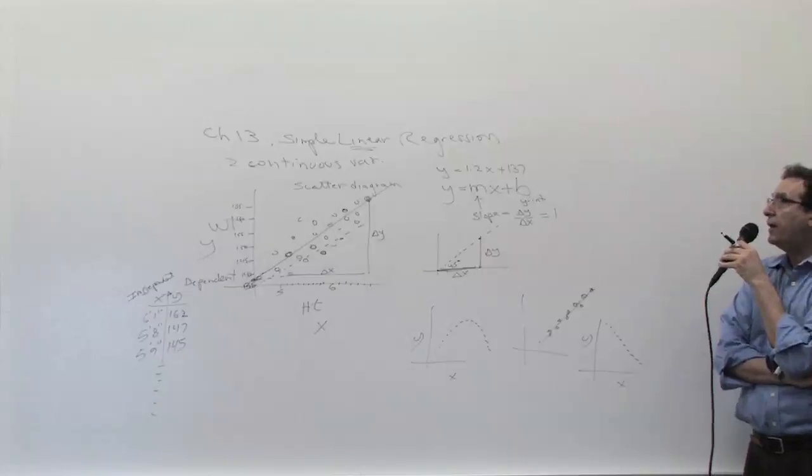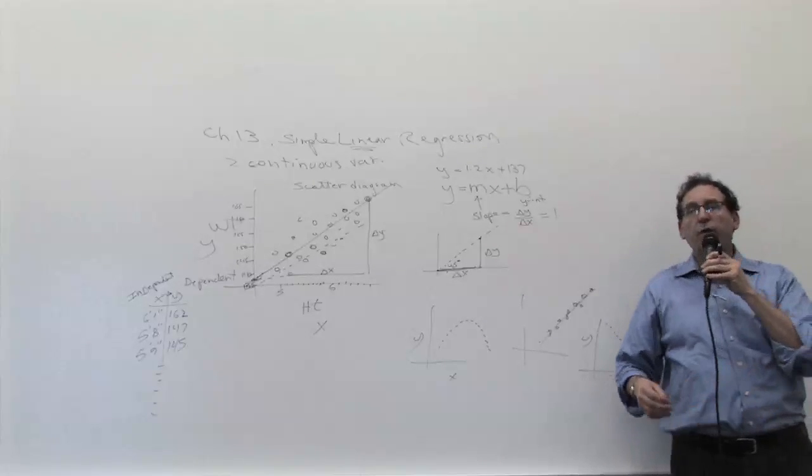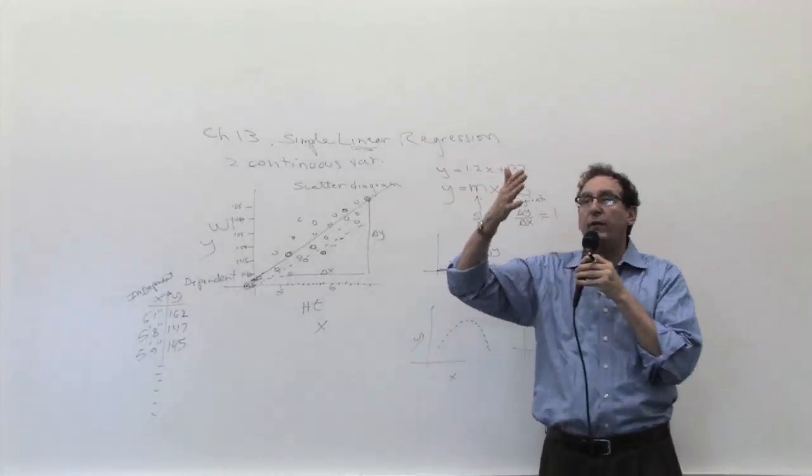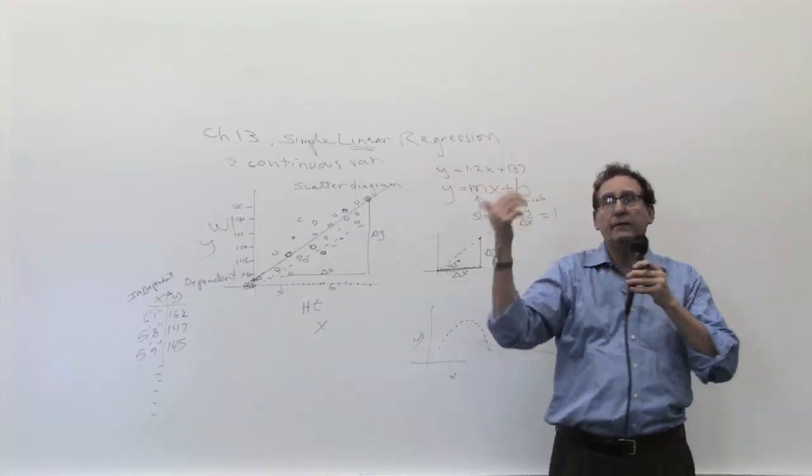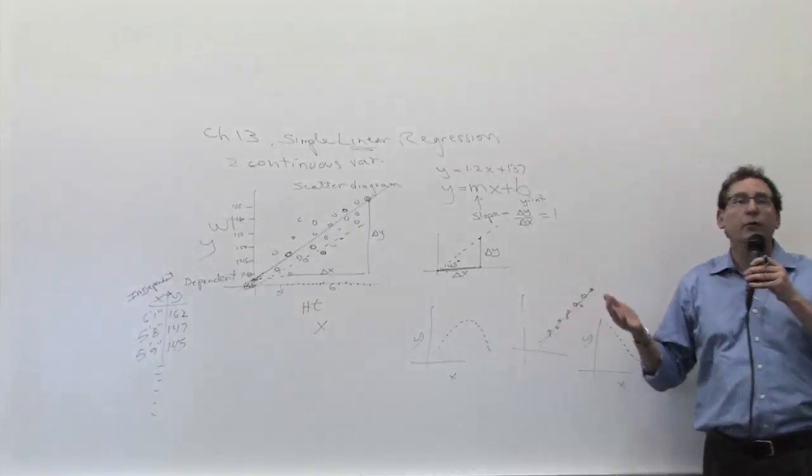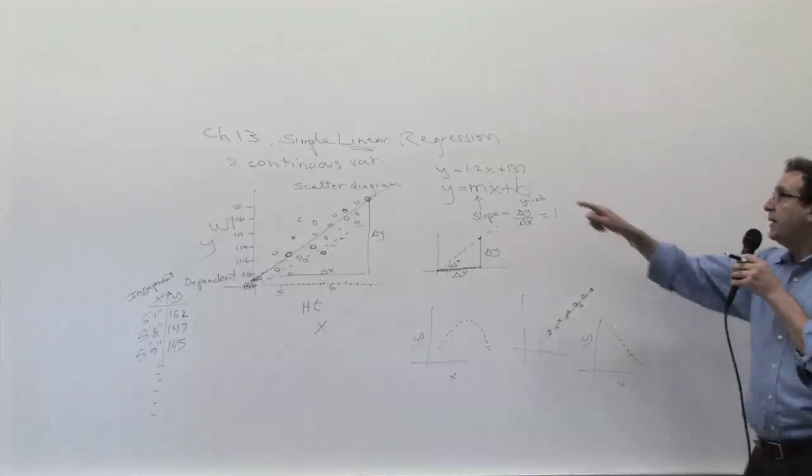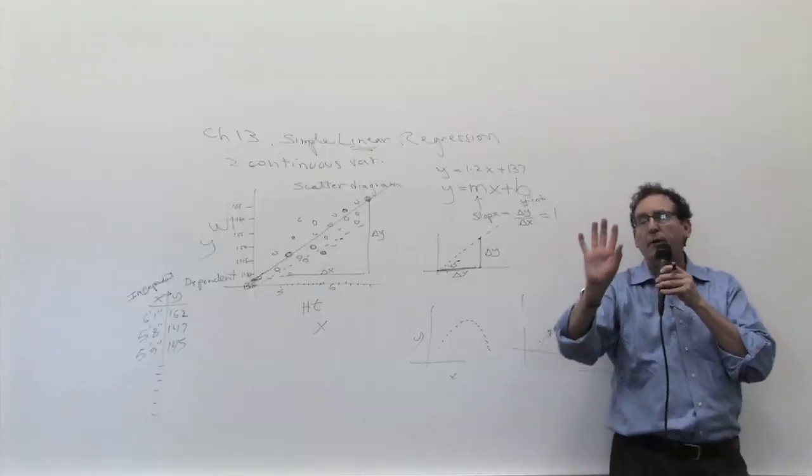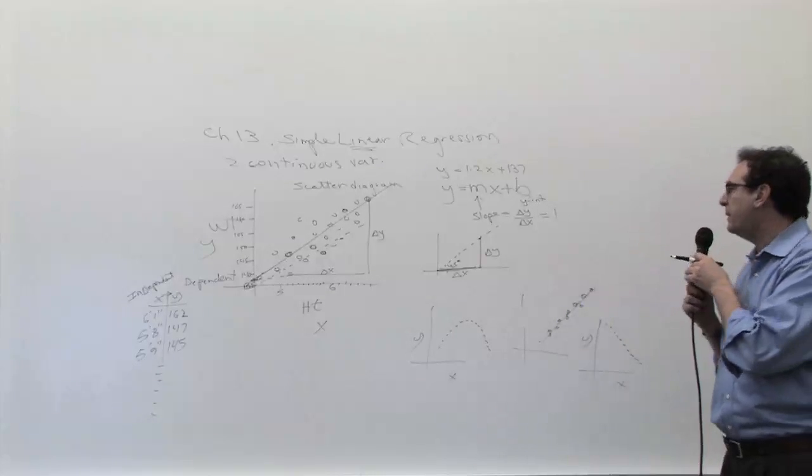Now, once you have the straight line, what would you do with it? Well, first of all, the straight line by itself is valuable because it's basically instead of dealing with 1,000 dots in front of your face, you have one little equation. That's the first thing. That's a nice summary of all the data.